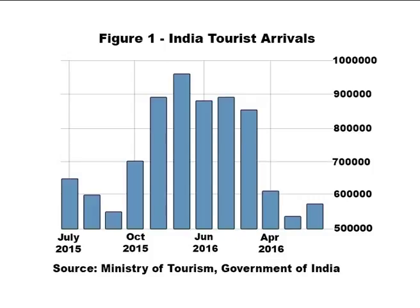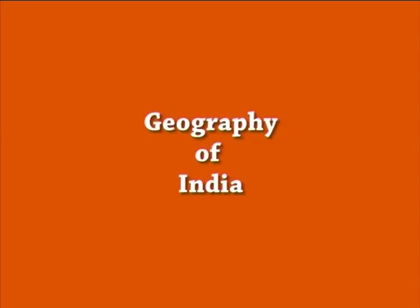According to the Ministry of Tourism, Government of India, the maximum tourists from foreign countries arrive in India in the months of October to March every year, as these months are featured with festivity in almost all the states. The figure shows Indian tourist arrivals from July 2015 to June 2016. The data clearly shows that tourism is higher in the months stated by the Ministry of Tourism, endorsing that the major attraction for tourists is the cultural diversity of India.